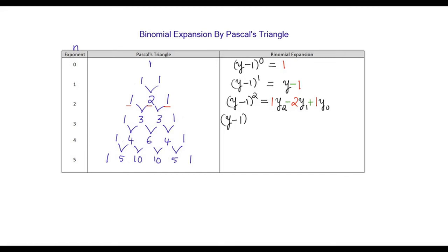(Y minus 1) to the power 3: again we will take Y and write the exponent 3, going on reducing it by 1 — Y^2, Y^1, and Y^0 — stopping at 0. Putting alternating positive and negative signs, always starting from positive: positive, negative, positive, negative. Using the coefficients from Pascal's triangle: 1, 3, 3, 1.